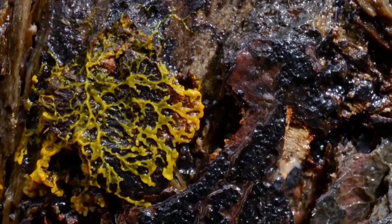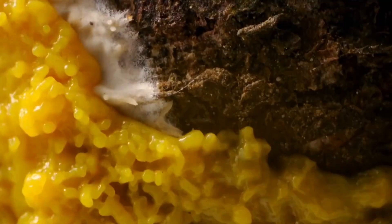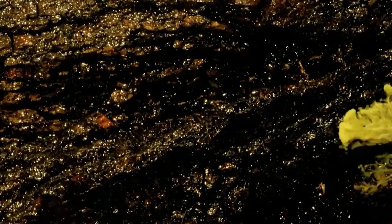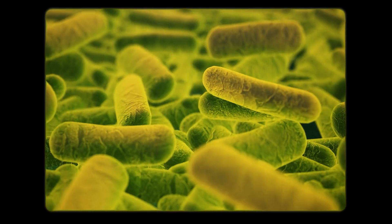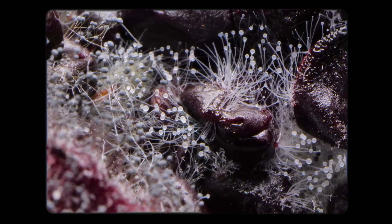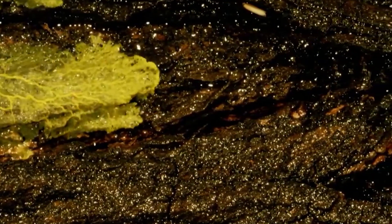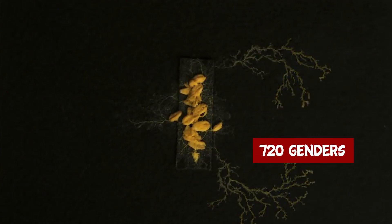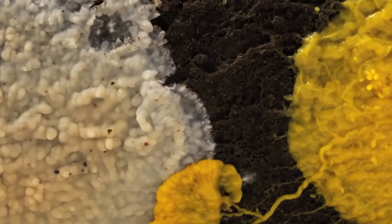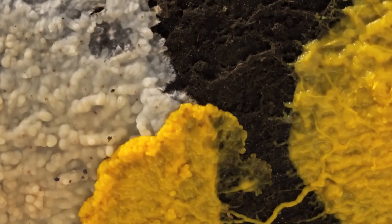Blob typically resides in damp, dark places, forest floors, and decaying vegetation. It sustains itself by consuming dead organic matter in its vicinity, primarily bacteria, yeasts, and fungal spores, significantly contributing to the forest ecosystem. This being, recognized for having about 720 different genders, boosts its species adaptability through heightened genetic diversity.